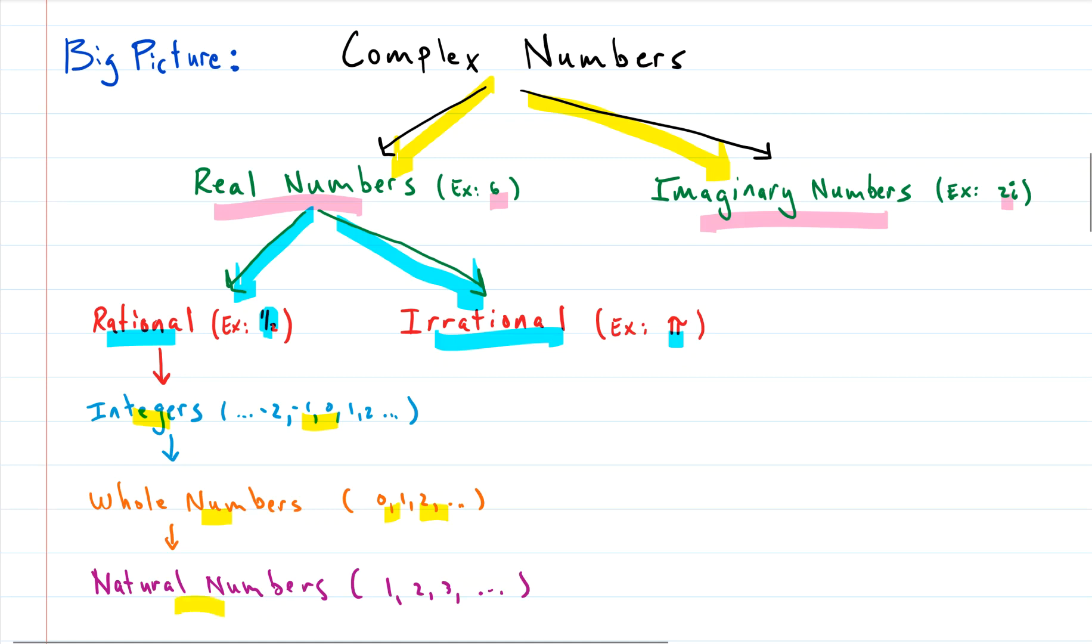And then we have one smaller subgroup inside of that which is called the natural numbers, sometimes it's called the counting numbers, because it is everything in the whole numbers but zero, so it starts at one and goes up with positive integers. So this is the number system that you've been working in in algebra and really probably all of your schooling in K through 12. So all of these fall into complex numbers. Complex numbers involves everything here on the screen.